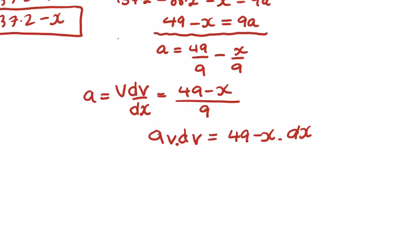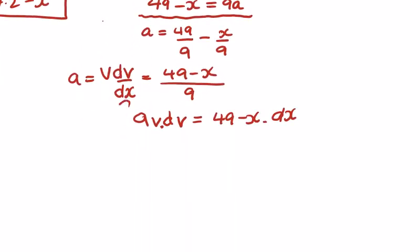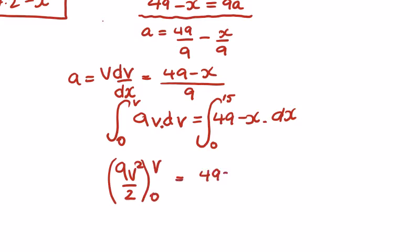Integrating, we want the speed when it's been raised to 15, so we're integrating to find speed, starting from rest when it has risen 15 meters, starting at 0. So 9v goes to 9v squared over 2 between v and 0, equals 49x minus x to the power of 2 over 2 between 15 and 0.